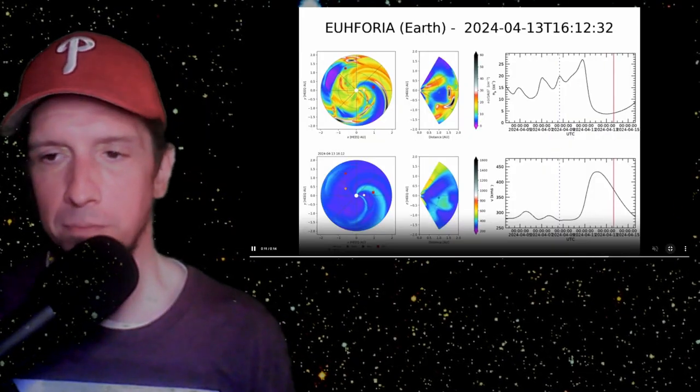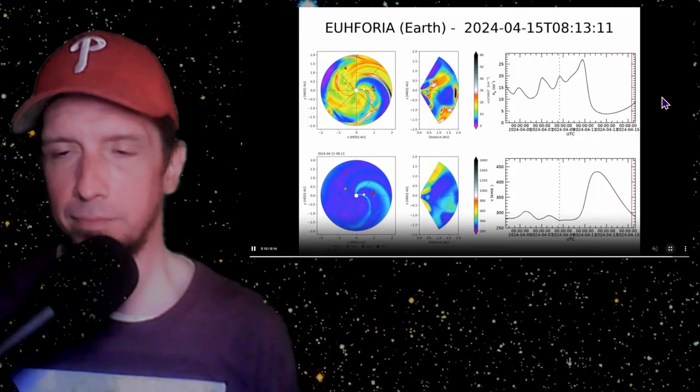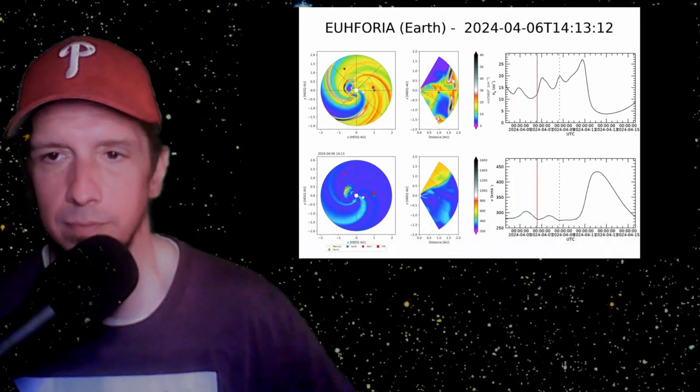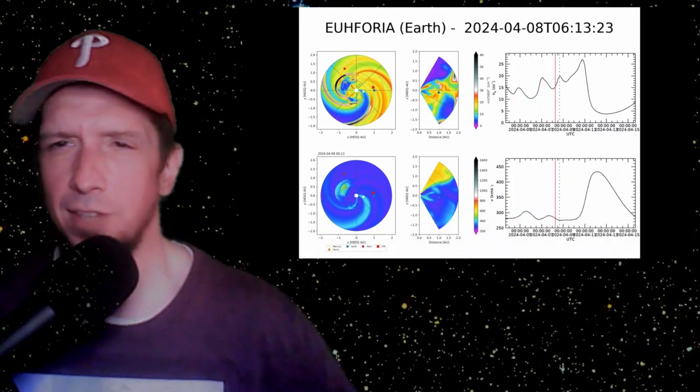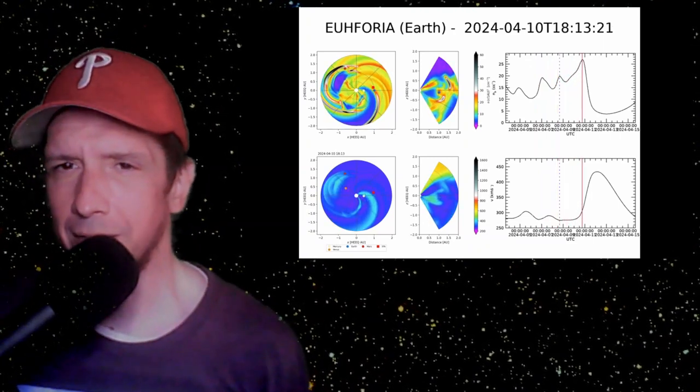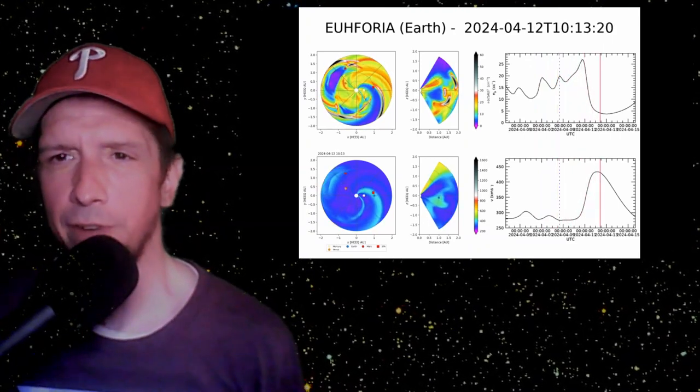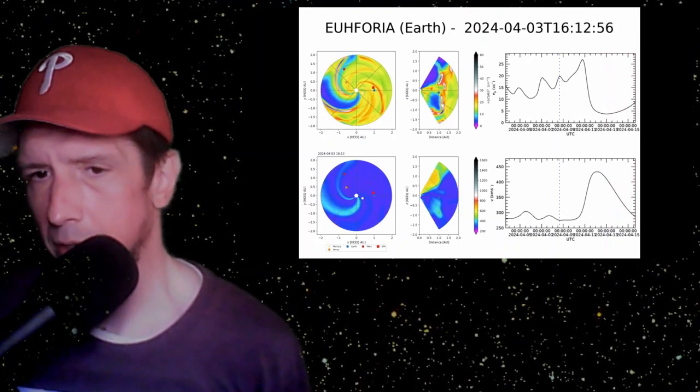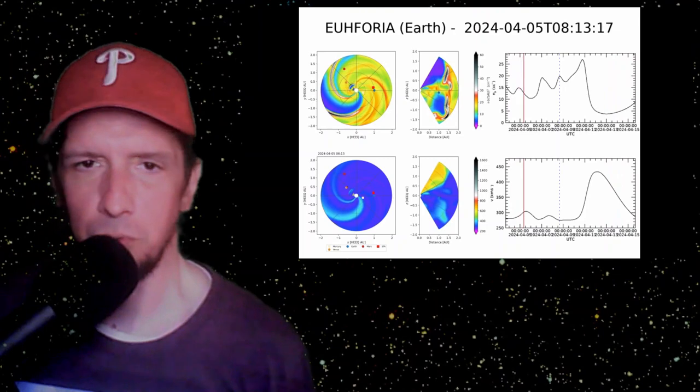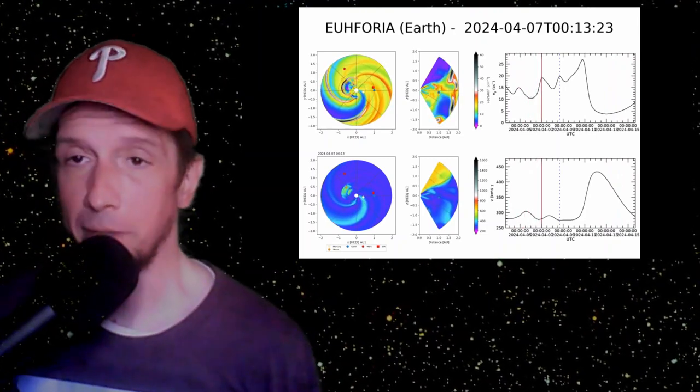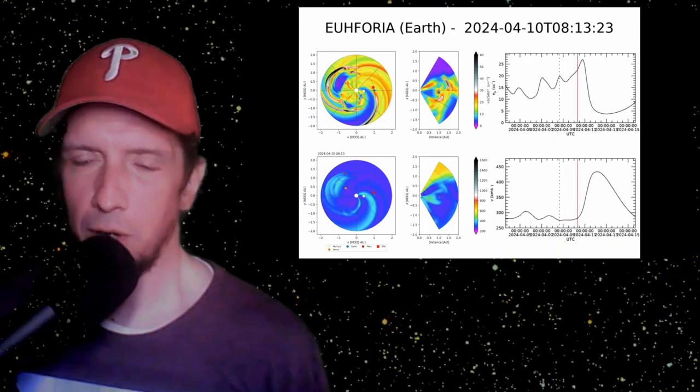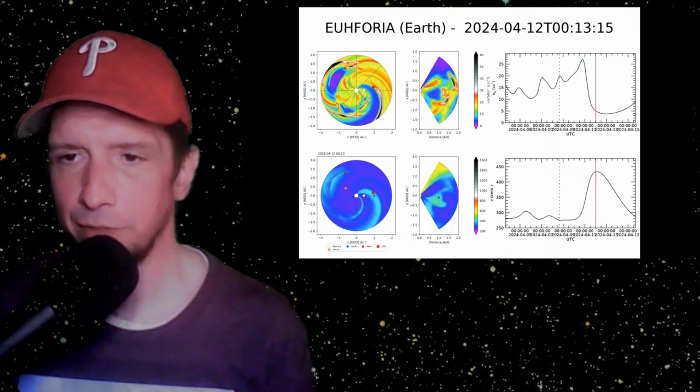Here's ESA's ENLIL spiral, let's blow that up. ESA is expecting the solar wind density to make it up over 25 protons per cubic centimeter. That density wave did not happen, although we are seeing a slightly elevated solar wind velocity.